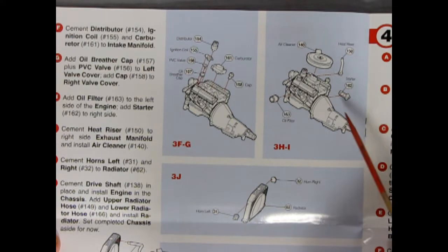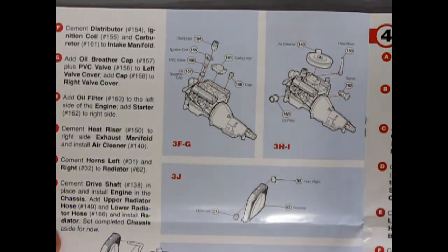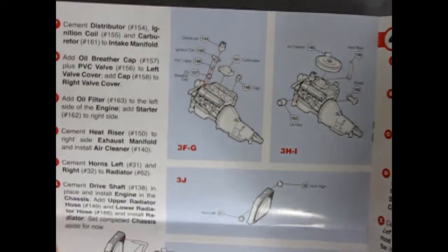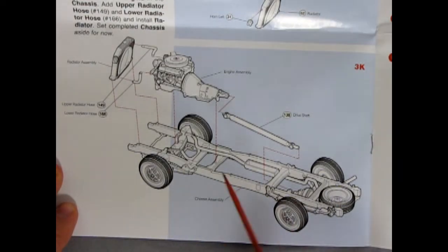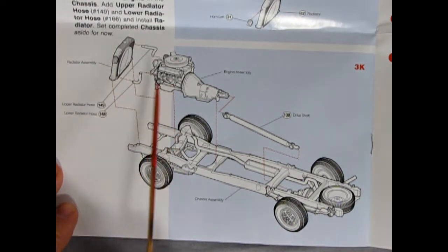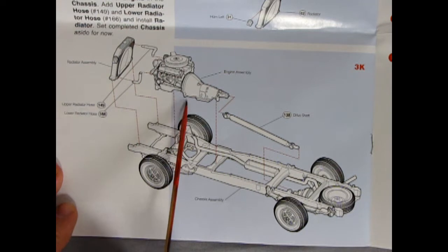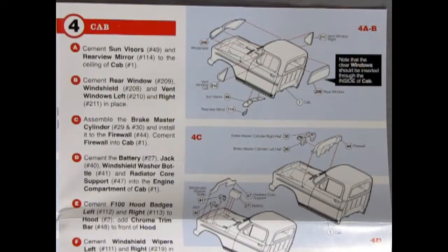We have our carburetor and a breather cap for our valve covers. And then on this side we see our oil filter going on, our air cleaner, heater hose and starter motor. And down here we have our horn, left and right, gluing onto our radiator. There's our engine going in on our frame, the radiator dropping in, and our upper and lower rad hoses as well as our drive shaft connecting us to our rear axle.